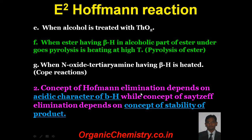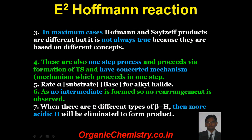The concept of Hoffman elimination depends on the acidic character of beta hydrogen, while the concept of Zaitsev elimination depends on the stability of the product. In maximum cases, Hoffman and Zaitsev products are different, but it is not always true because they are based on different concepts. These are also one-step processes, proceeding via formation of a transition state with a concerted mechanism. Rate is directly proportional to concentration of substrate as well as concentration of base for alkyl halide. As no intermediate is formed, no rearrangement is observed. When there are two different types of beta hydrogen, the more acidic beta hydrogen is eliminated to form the product.